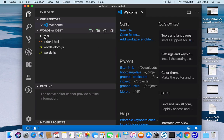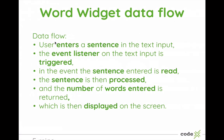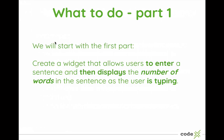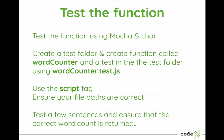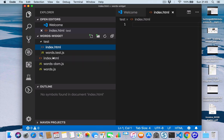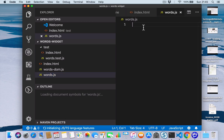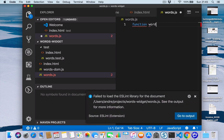I've created a few files but haven't done much in them yet. Let's open up VS Code and get going. I want to start initially with testing. Going back to my presentation, the first part we'll do is create the widget that allows the user to enter a sentence and display the number of words as the user is typing. We'll start off by testing the function. I've created the test folders and we want to create a function called wordCounter.